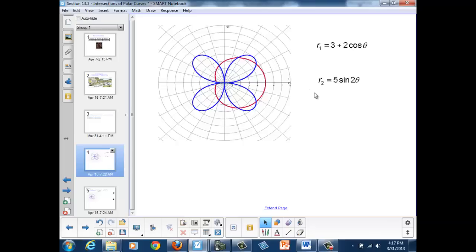If we look at these two graphs, it appears that they intersect at eight different points. One, two, three, four, five, six, seven, eight.